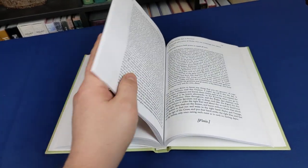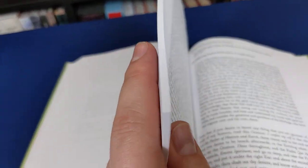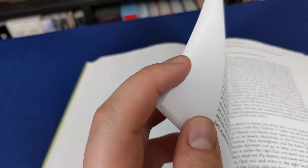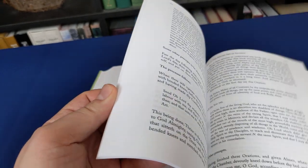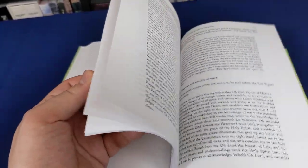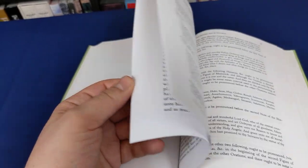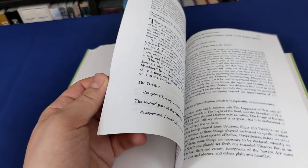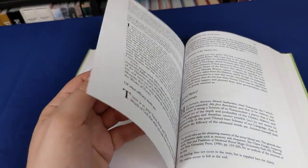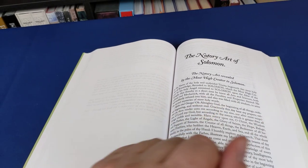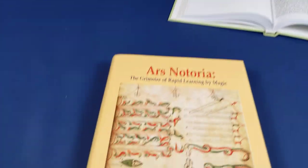In Joseph Peterson's edition, this is the contents of the Ars Notoria. It's basically a grimoire for learning fast. The idea is that you spend a few months in prayer to various angels. Dr. Skinner argues that they may not be quite as angelic as the book claims them to be.